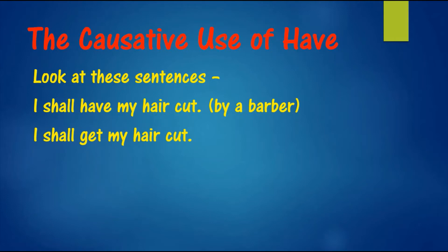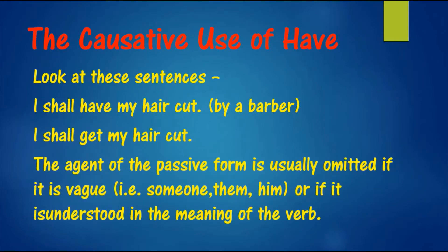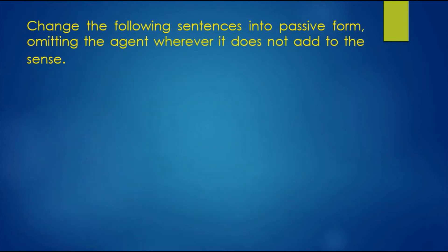Look at these sentences. If the agent is vague — someone, them, him — and not clear, or if it is understood in the meaning of the verb, change the following sentences into passive forms, omitting the agent wherever it does not add to the sense.